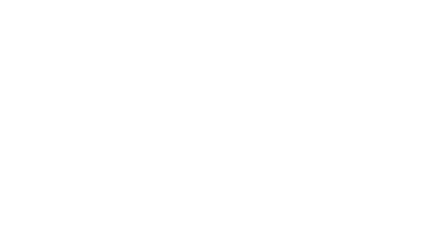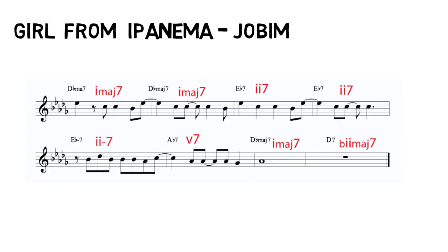A very famous example: 'The Girl from Ipanema.' That's in D-flat major; the second chord is E-flat seven, then it goes to E-flat minor seven / A-flat seven, and then resolves back to the tonic. Here is the chord progression in C.